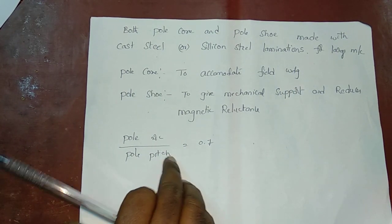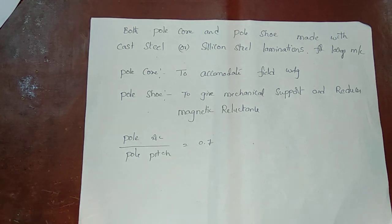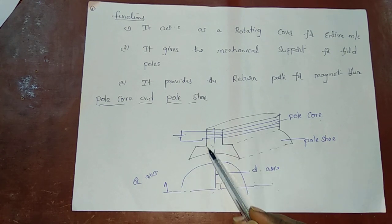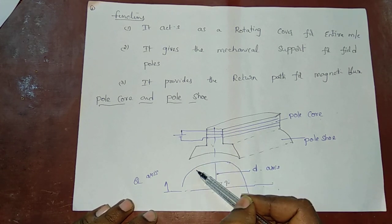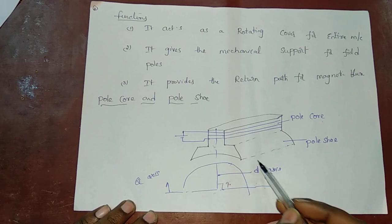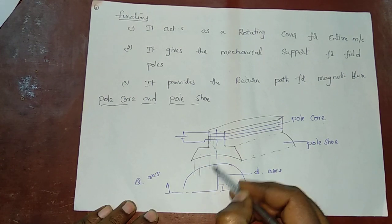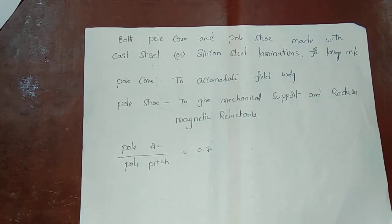The pole core is used to accommodate the field winding. The pole shoe provides mechanical support to the pole core. The pole shoe is designed to reduce the magnetic reluctance so that the magnetic flux can flow more easily.